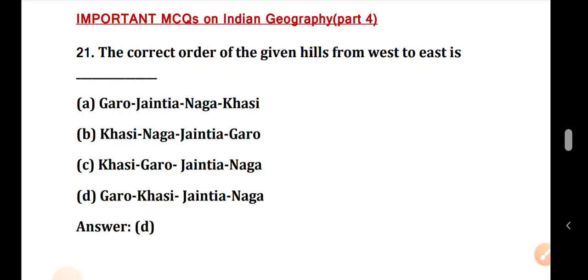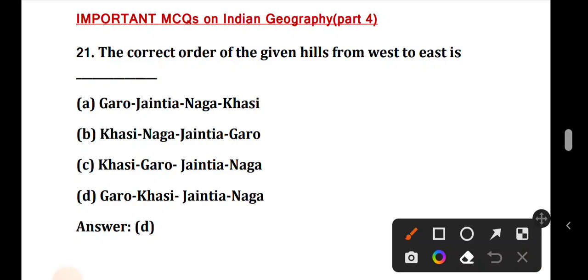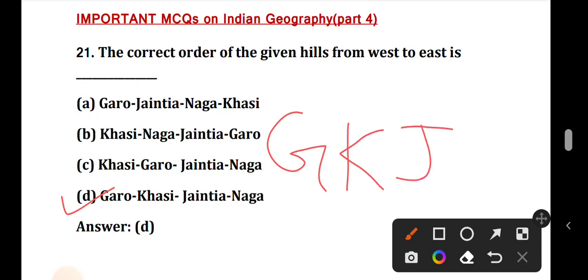Question number 21: The correct order of the given hills from west to east. We have known hills from west to east order. The correct answer is Option D — this is the correct order of the given hills from west to east.